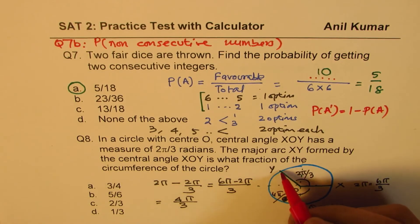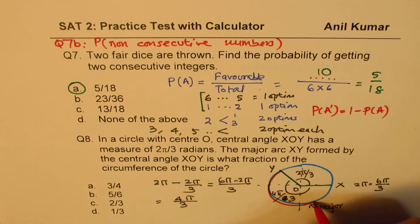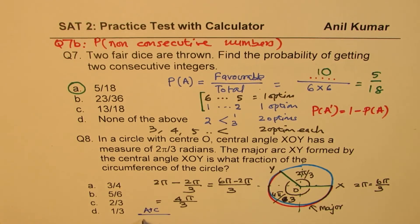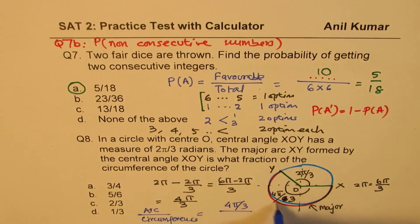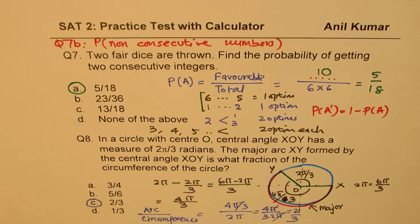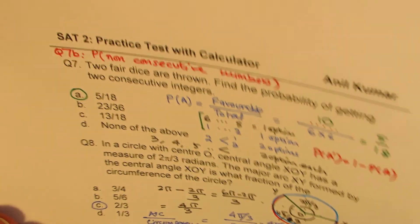The ratio of arc to circumference equals the ratio of the corresponding angle to the full angle. So major arc over circumference equals (4π/3) over (2π), which simplifies to 4π/3 times 1/2π. The π's cancel, giving 2 over 3. So option C is the right answer.